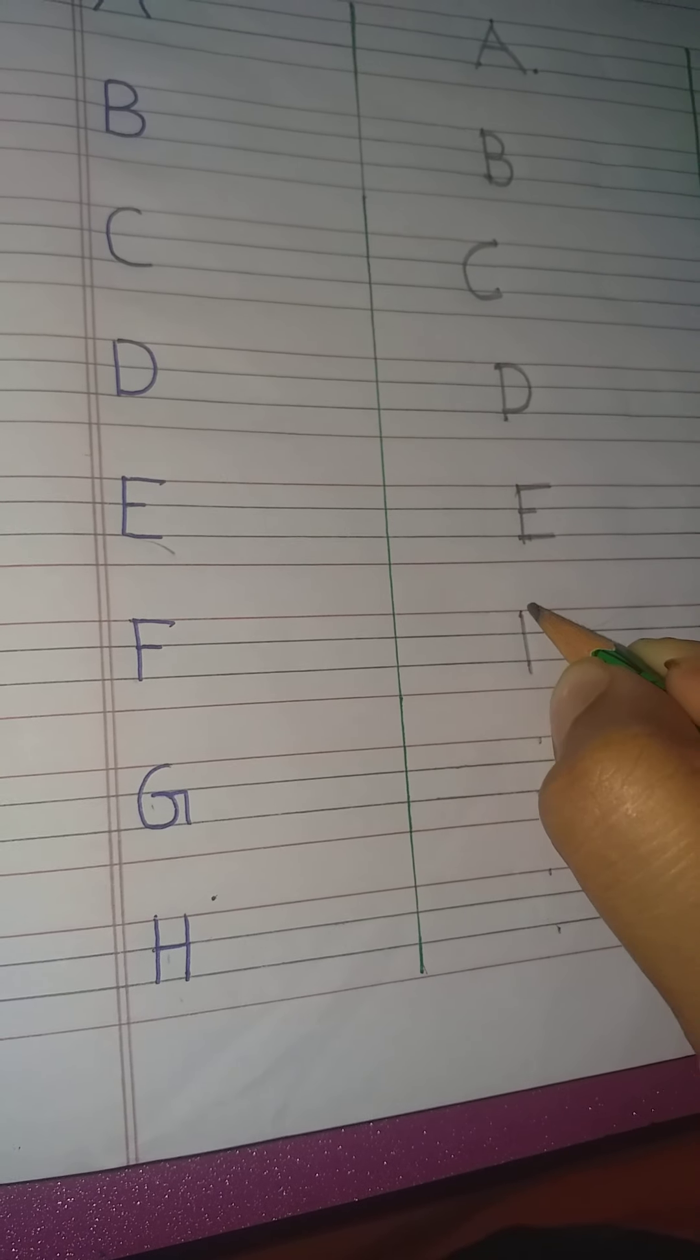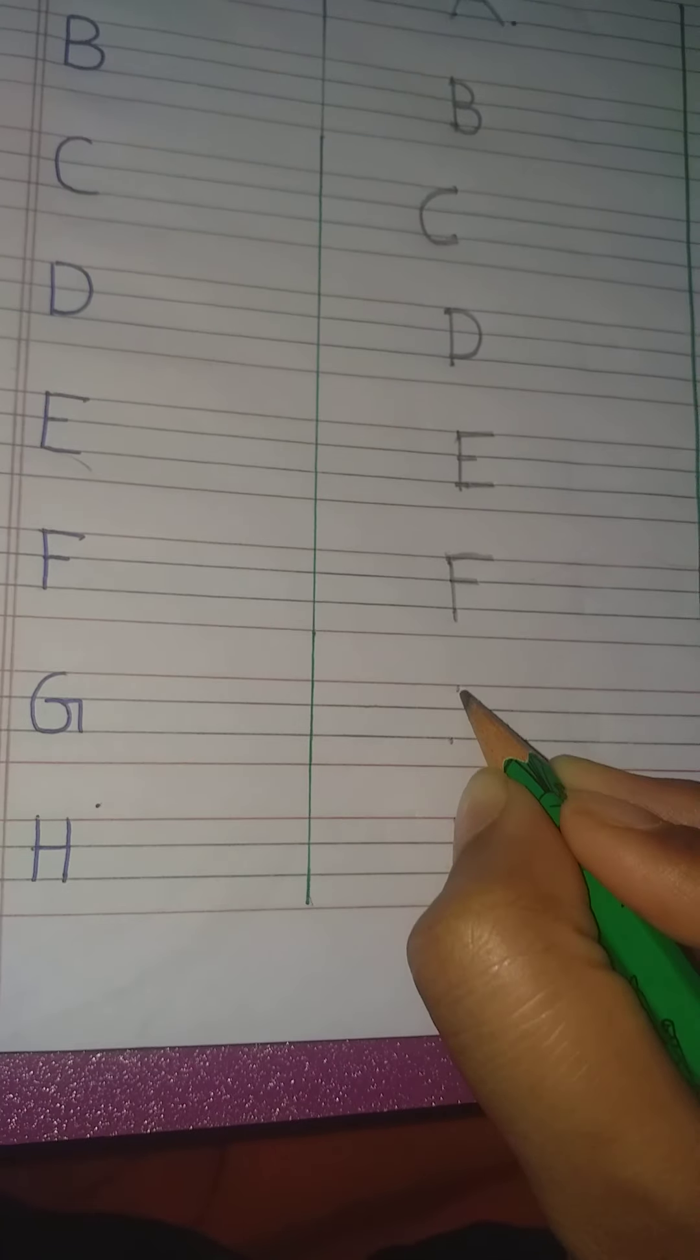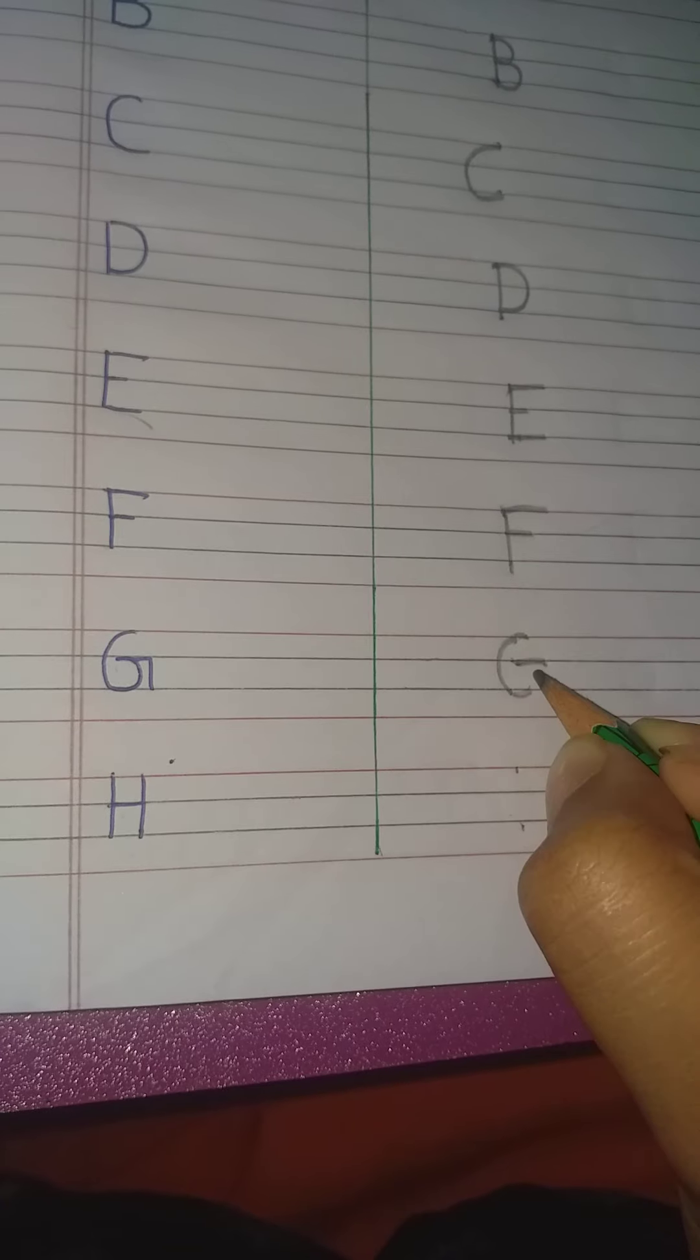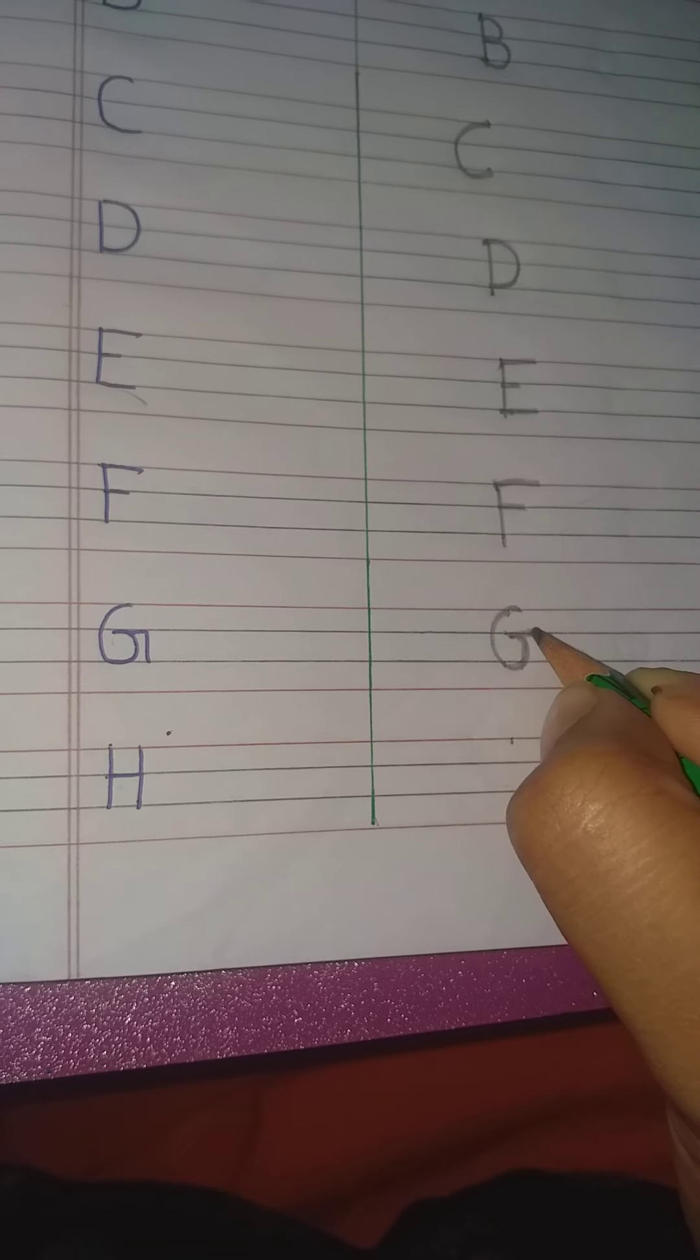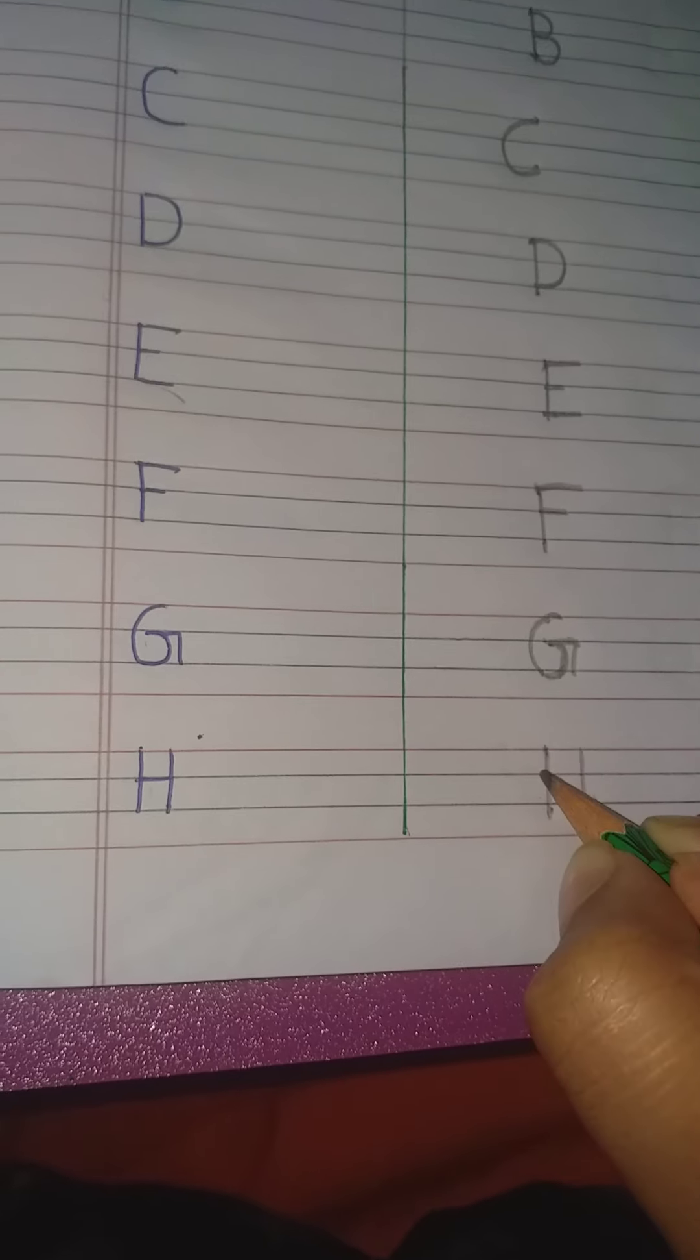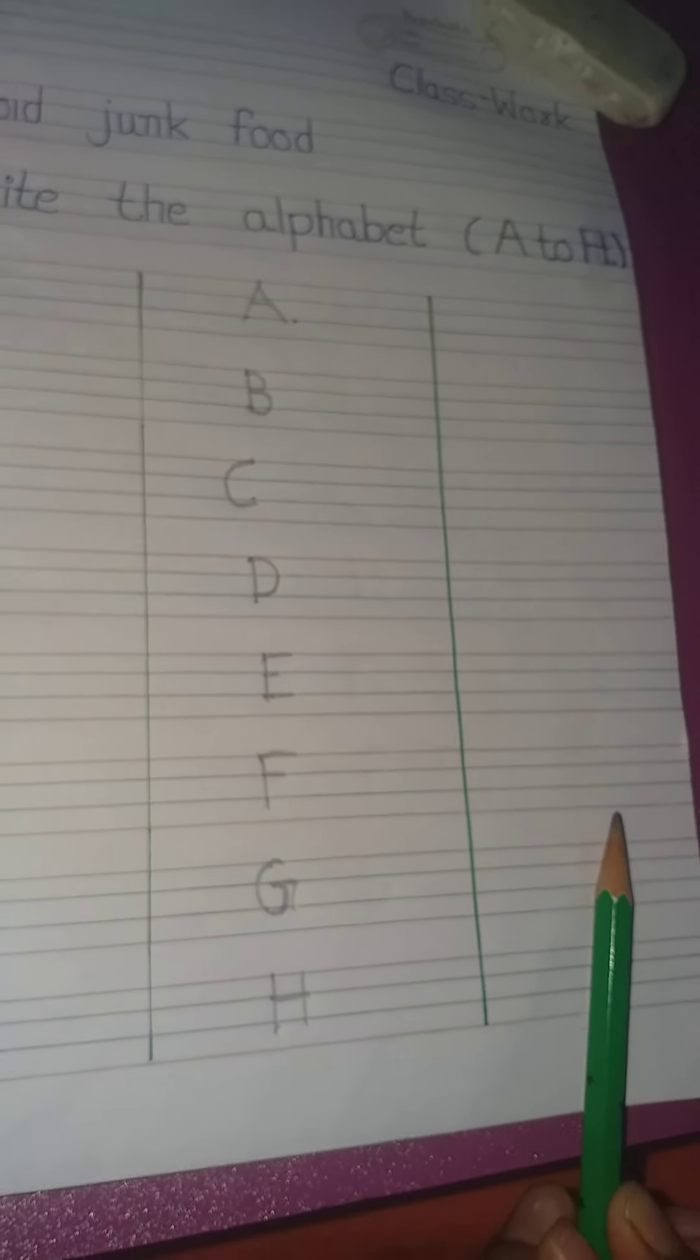G we have half curve, sleeping line, and one standing line, G. H we have one standing line, one more standing line, and sleeping line, H.